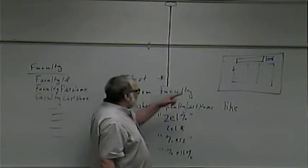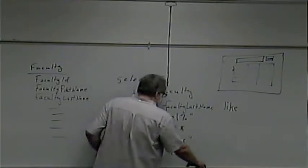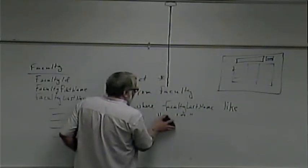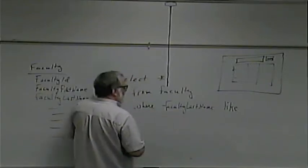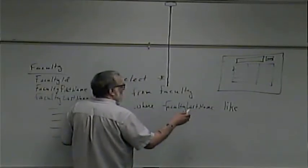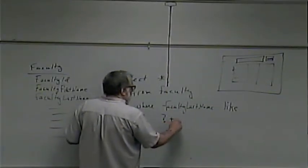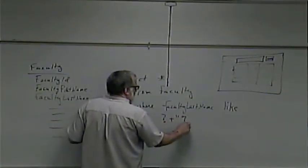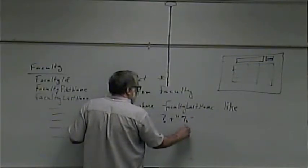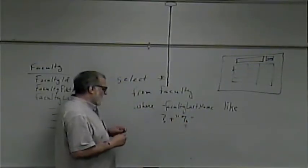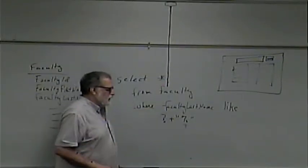Now, how would we do this in the SQL data source? If I wanted the search to start with the value from the text box, I'd write: LIKE ? + '%', and then say the question mark comes from the text box — concatenating the wildcard onto it. Let's go do that example quickly.